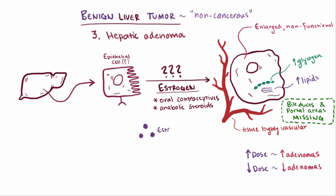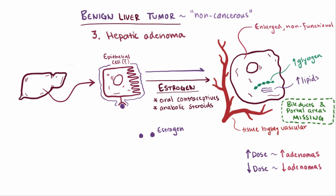One theory is that estrogen might bind to estrogen receptors on the hepatocytes themselves and cause conversion of these hepatocytes into hepatic adenoma cells. Though it probably has a lot to do with genetic predisposition, or specific genetic mutations, in combination with estrogen-based therapies.